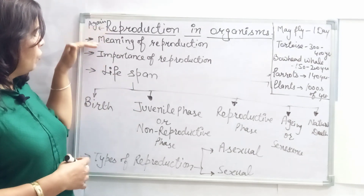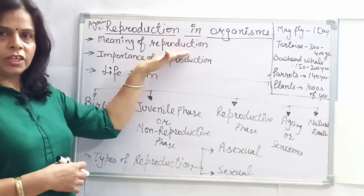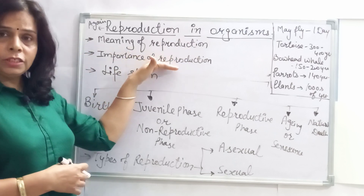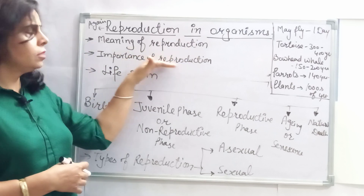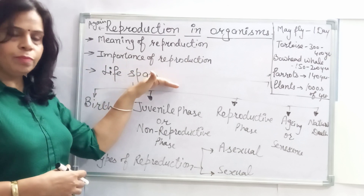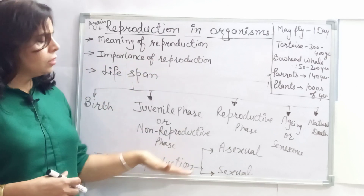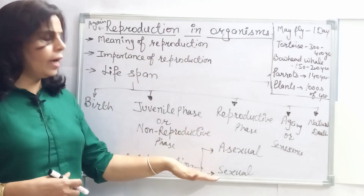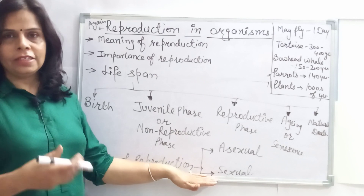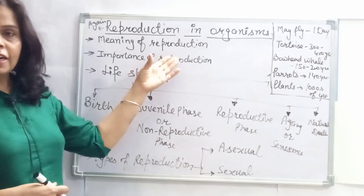First, we will understand the meaning of reproduction. After that, we will understand the importance of reproduction, then lifespan, and then types of reproduction — asexual and sexual reproduction in detail. So let us start.